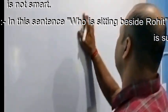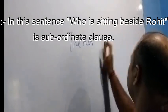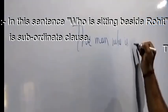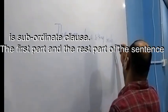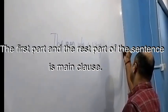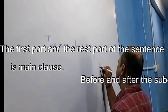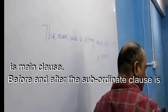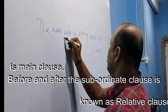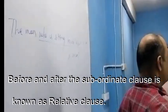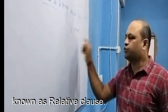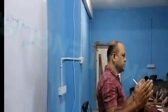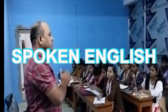So, relative clause. Consider the sentence: 'The man who is sitting beside Rohit is not so smart.' The sovereign clause here is 'who is sitting beside Rohit.' The first part, 'the man,' is the first part of the main clause, and the rest of the main clause is 'is not so smart.' So the main clause has been bifurcated — one part is before the sovereign clause and another part is after the sovereign clause. So the sovereign clause is here in the middle.